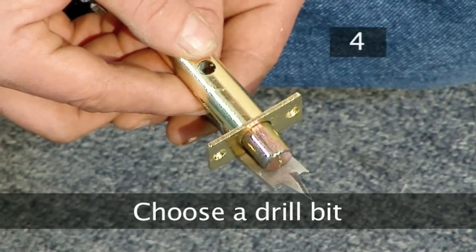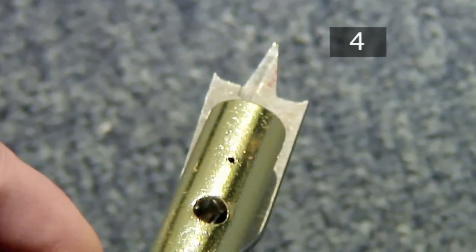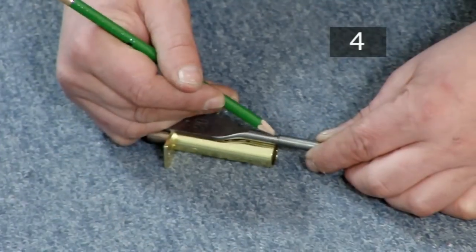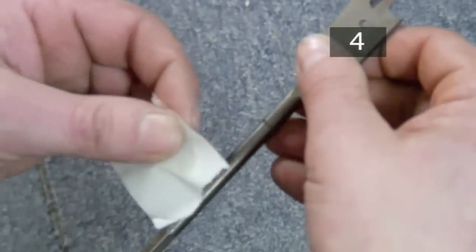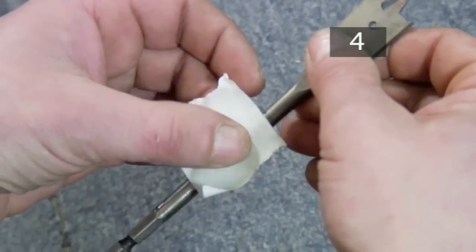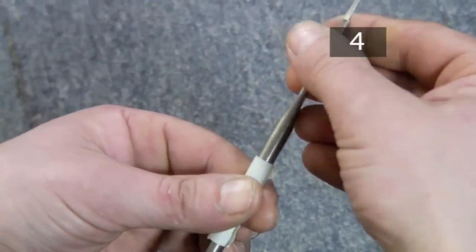Step 4. Choose a drill bit. Select a flat wood cutting bit that is very slightly wider than the bolt barrel. Hold the bolt against the drill bit. Mark its depth on the bit with a pencil and then masking tape. This will ensure that you drill to the correct level. Now, attach the drill bit to the drill.